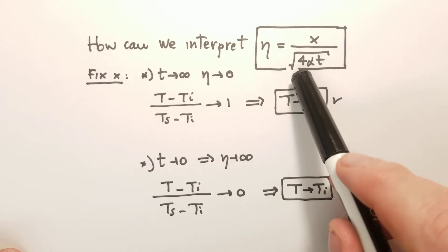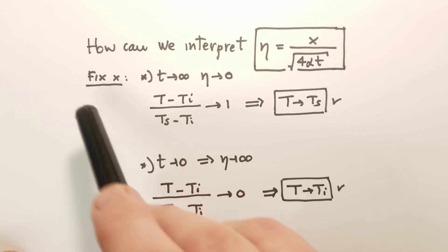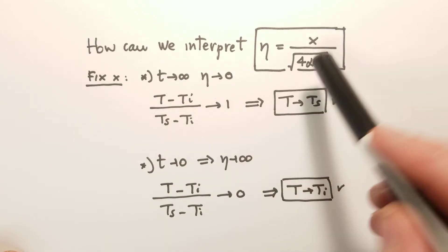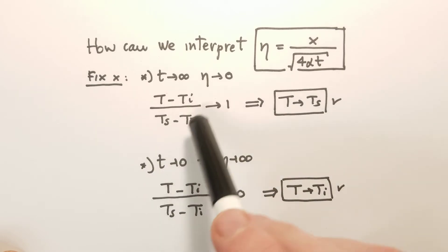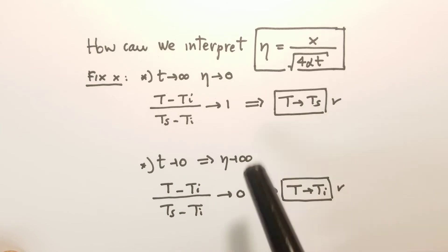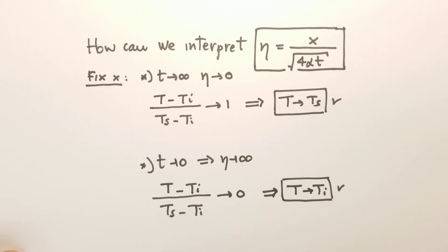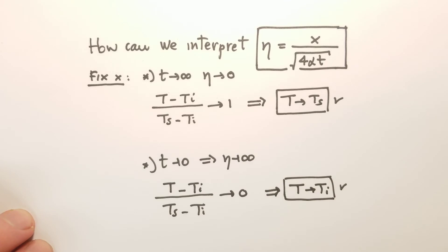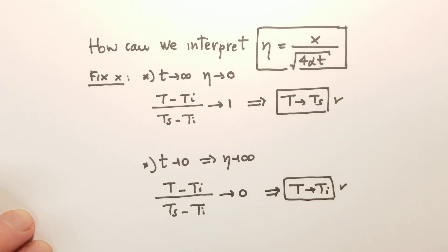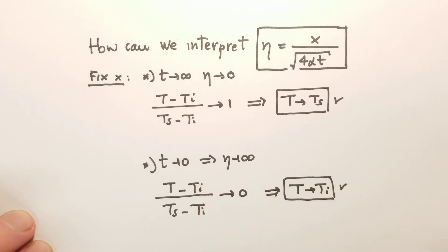Let's interpret eta. If we pick a fixed position x inside the body and let time go to infinity, then eta goes to zero — meaning the non-dimensional temperature ratio goes to one, so the temperature at that position approaches Ts. Conversely, if we fix x and let time go to zero, then eta goes to infinity and the ratio goes to zero, recovering temperature Ti. This confirms that at time equals zero all points inside the body have the initial temperature Ti.